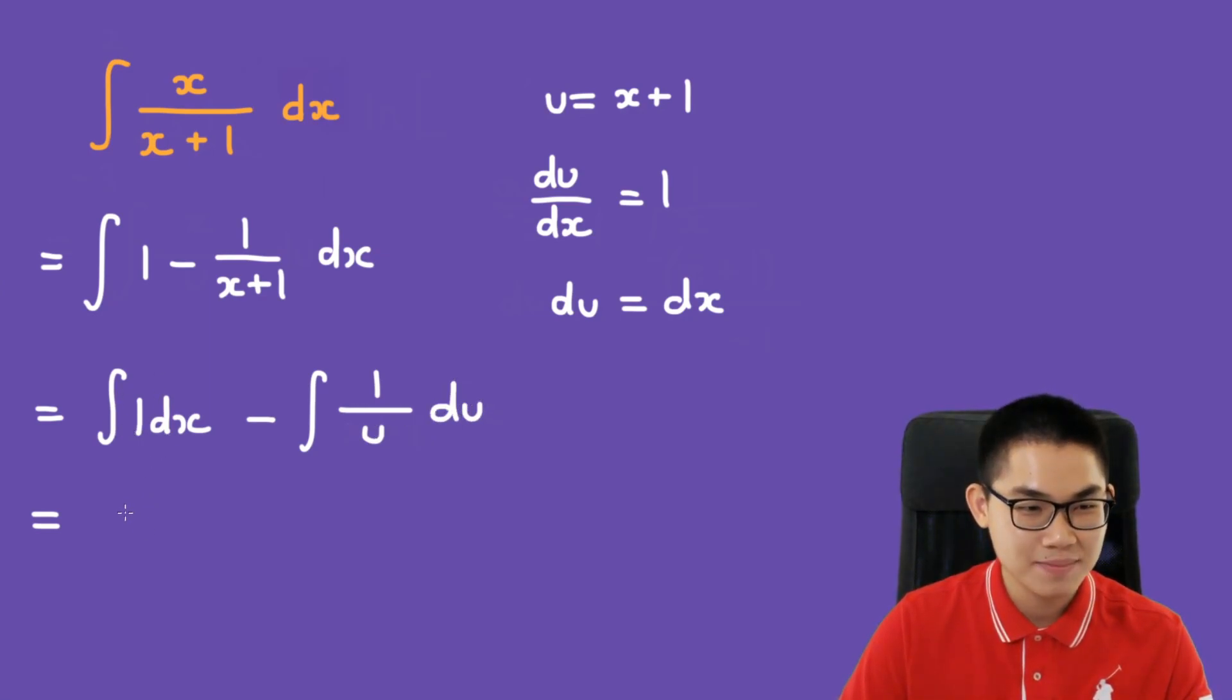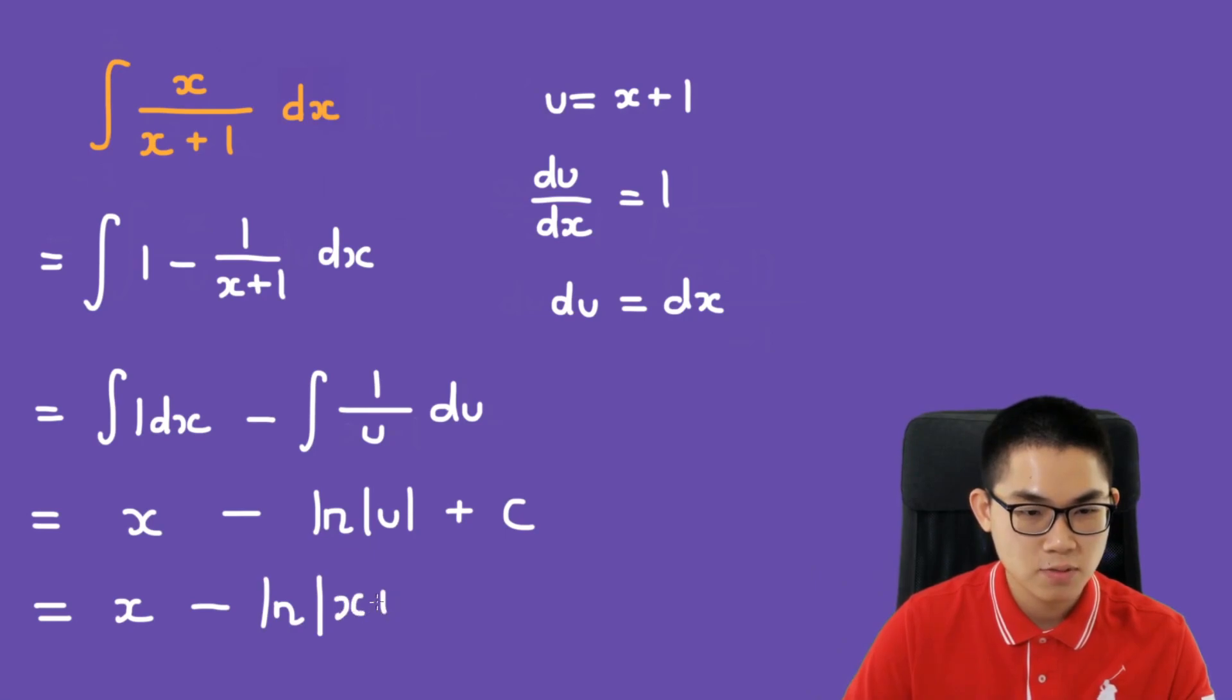The antiderivative of 1 is simply x, and then the antiderivative of 1 over u is the ln of absolute value of u plus c. So we get x minus ln of x plus 1 plus c, and that's it.